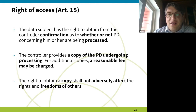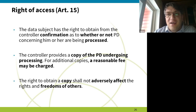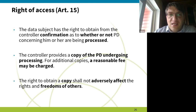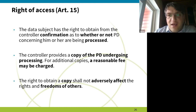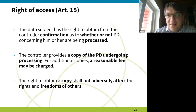In practice, companies send the factual information they hold — education, professional activities — but usually say they don't give profiling information because it's a trade secret. There was a Tinder case where a person requested all their information. Tinder gave everything the person had entered, but when asked why some profiles were shown and others weren't, they said that's already a trade secret and they are not sharing it.